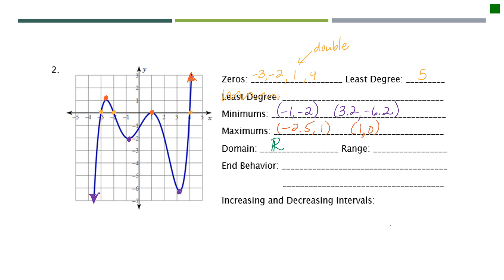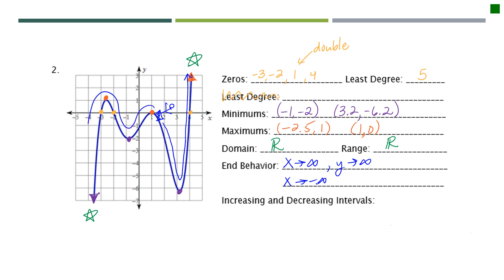Domain is always all real numbers. For the range, since this graph goes up forever on one side and down forever on the other side, the range is actually all real numbers too. The domain will always be all real numbers; the range will sometimes be all real numbers. For end behavior: as x goes to the right, y goes toward positive infinity. As x goes to the left, y goes toward negative infinity.